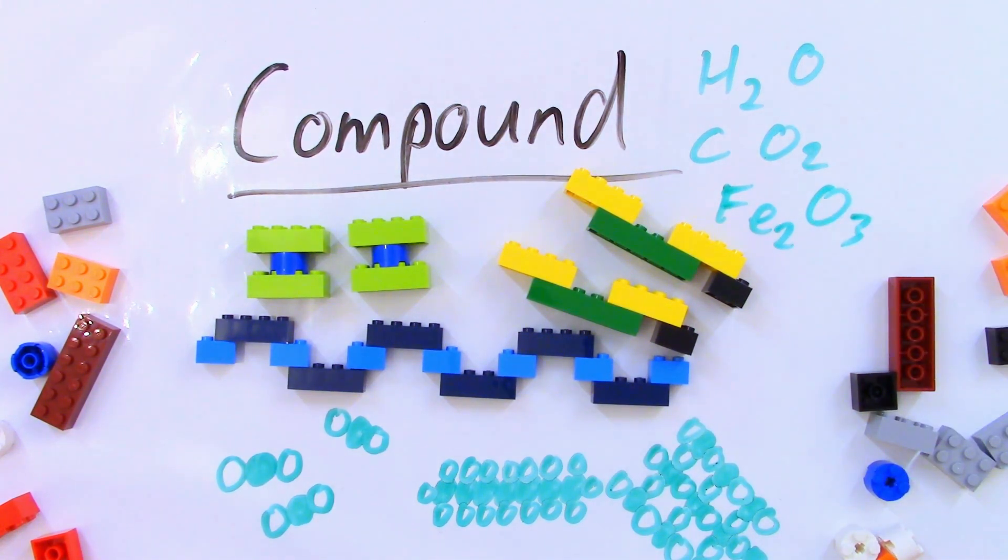To learn more about interpreting chemical formulae, please click the link at the top right of screen now. If a substance has a double-barreled name like carbon monoxide, sodium chloride, copper sulfate or silicon dioxide, then there's a high probability that it's a compound, especially at GCSE.